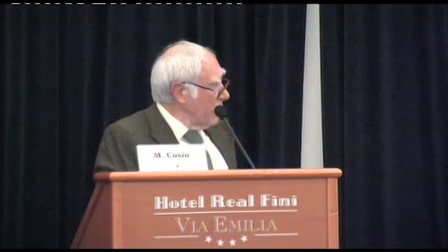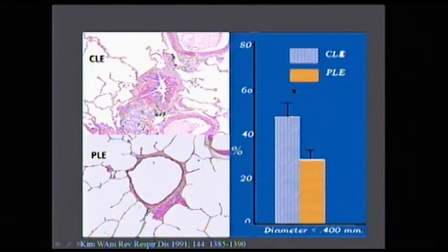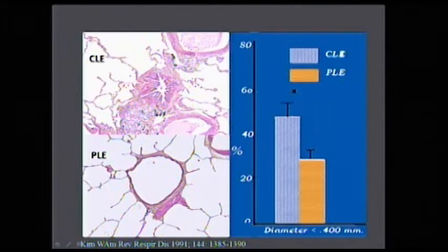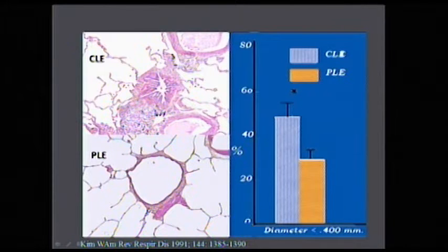Another important thing about these types of emphysema is that in centrilobular emphysema, the type of airway most commonly seen looks quite a bit like asthma, while in panlobular emphysema the airways are not as diseased. When we look at airway diameters — the proportion of airways less than 400 microns — almost 50% of airways in centrilobular emphysema are in this very small family, while in panlobular emphysema it is about 25–30%. So this is a very different type of airway abnormality.